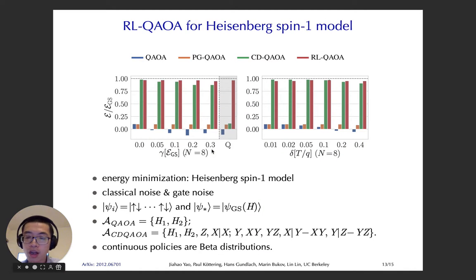Besides the spin 1/2 Ising model, we also try on the spin 1 Heisenberg models. And here, there are some little details. Say, the policy is we changed to another kind of policy, say the beta distribution. And it also works pretty good in this setting.